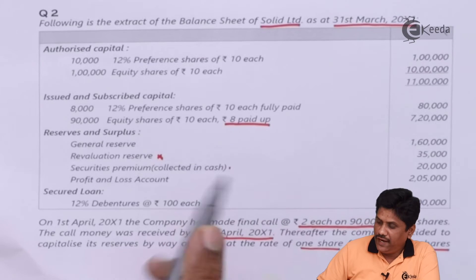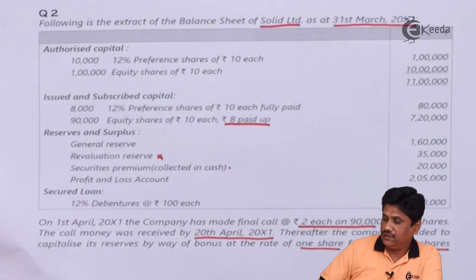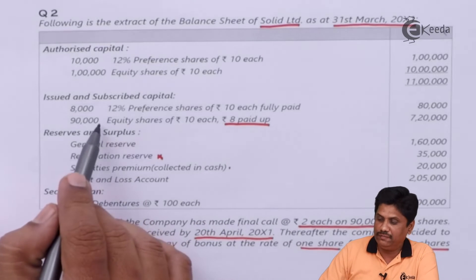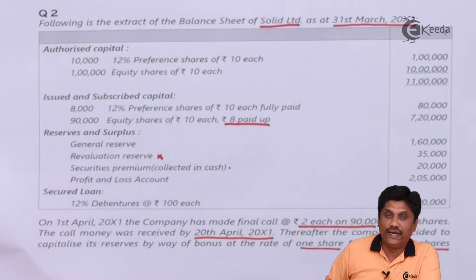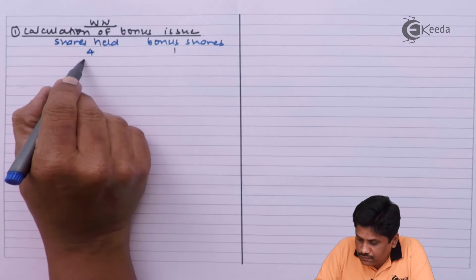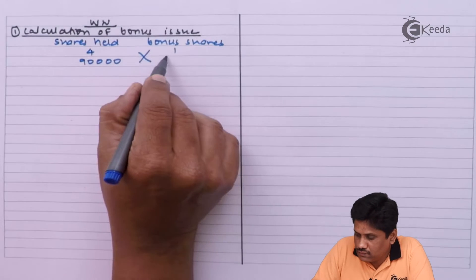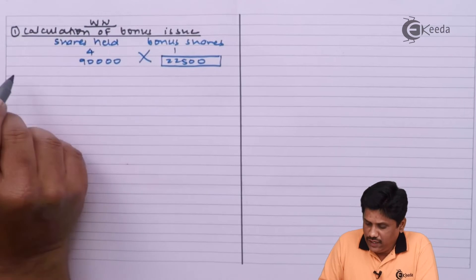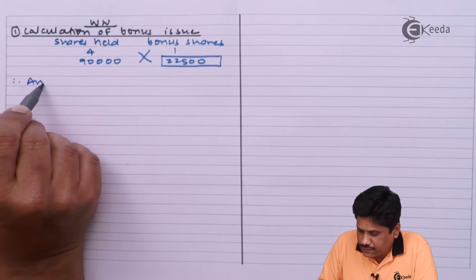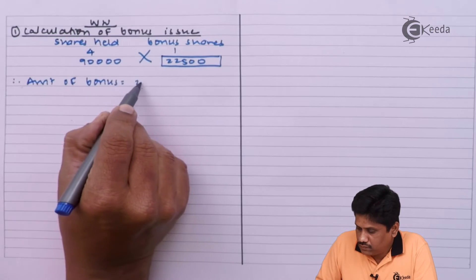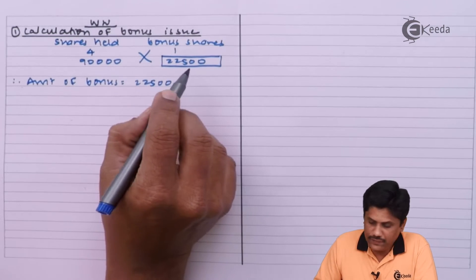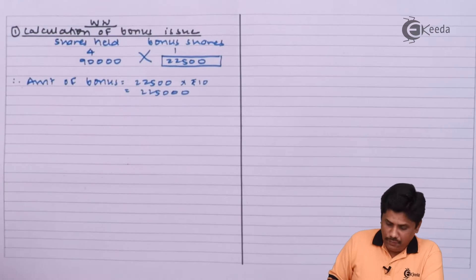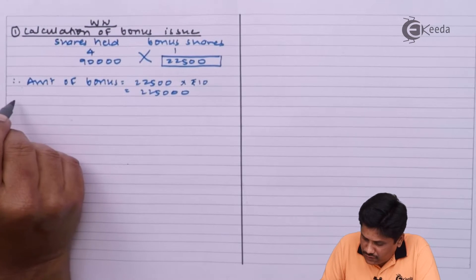Look at the balance sheet — 90,000 equity shares are there. They were originally partly paid up but we made the final call, so now they are fully paid up. Based on 90,000 shares at ratio 1:4, bonus shares will be 22,500 shares. Therefore amount of bonus = 22,500 multiplied by ₹10 = ₹2,25,000.